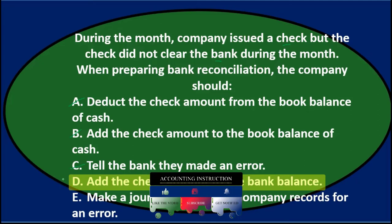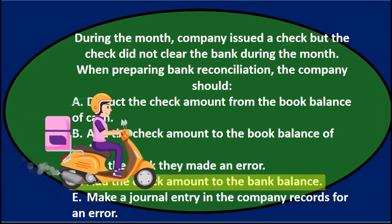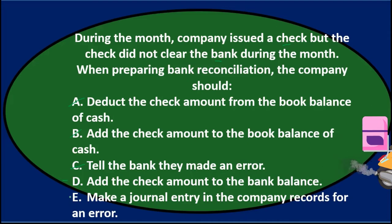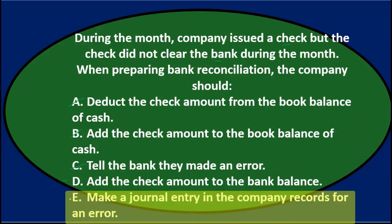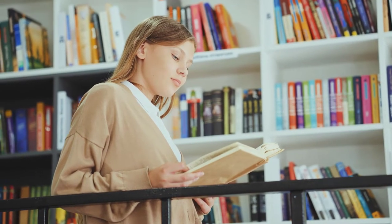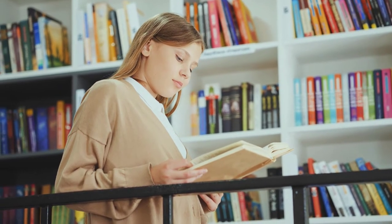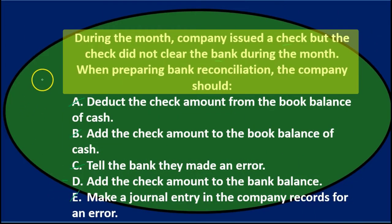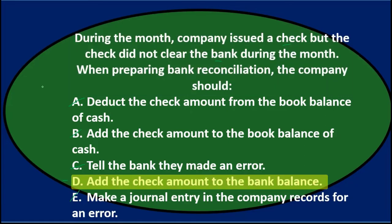D says add the check amount to the bank balance, and that's what we do on the bank reconciliation — the bank balance needs to go up. E says make a journal entry for an error, but we didn't make an error; our books are right. It's only a timing difference, not an error. So the correct answer is D: add the check amount to the bank balance side of the bank reconciliation.